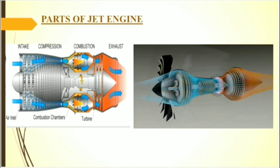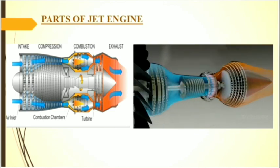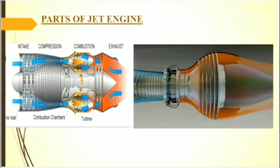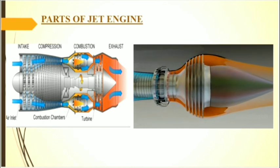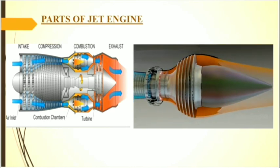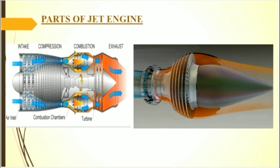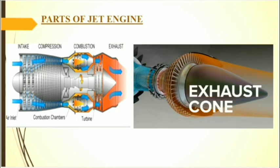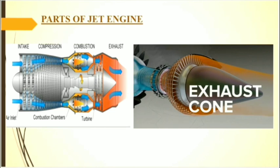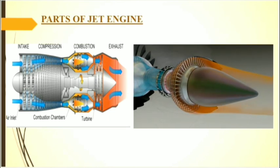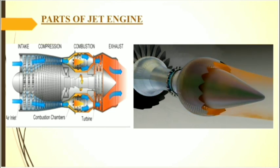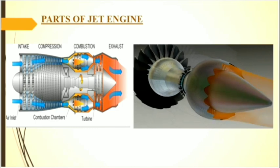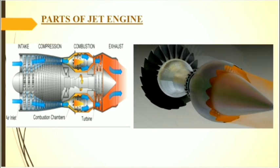Secondary air enters through a set of relatively large holes located towards the rear of the liner, which dilutes and cools the hot gases. The turbine assembly drives the compressor and accessories by extracting some of the energy and pressure from the combustion gases. The exhaust cone, attached to the rear of the turbine assembly, is a tapered cylinder-shaped outlet that eliminates turbulence in the emerging jet, giving maximum velocity.